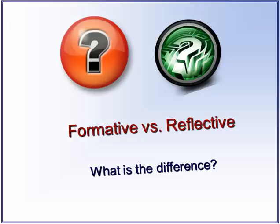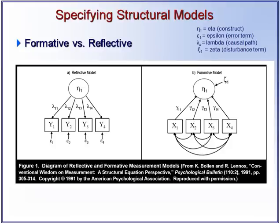If there is a problem with the measures, automatically there will be a problem with the structural model also. There are actually two models of the relationship between constructs and measures. The first is called the reflective measurement model and the second is called the formative measurement model. In the reflective model, it's the construct that leads to change in the measurement items — sometimes called indicators — but in the formative model, it's the measurement items that cause the change in the construct.